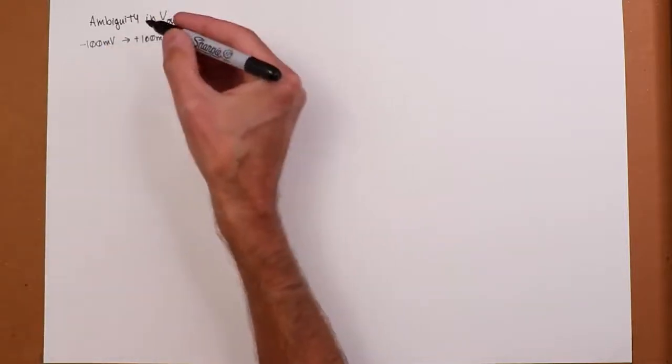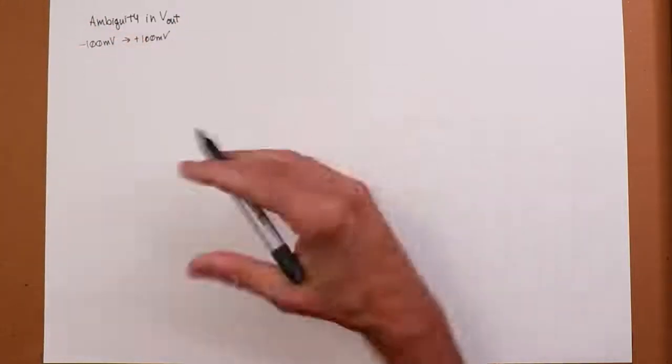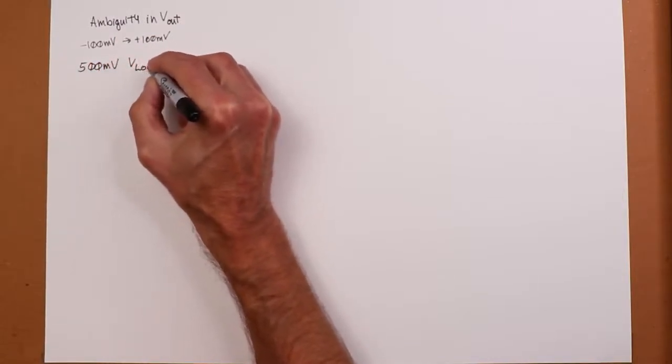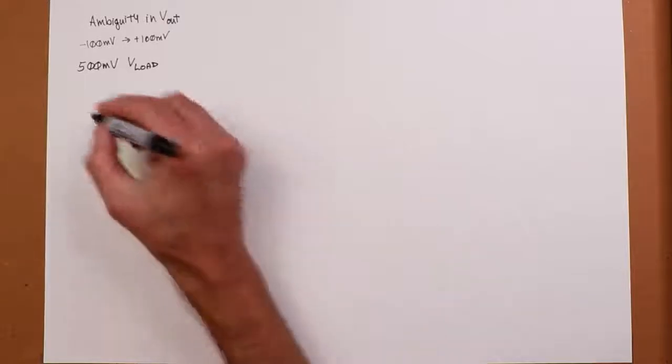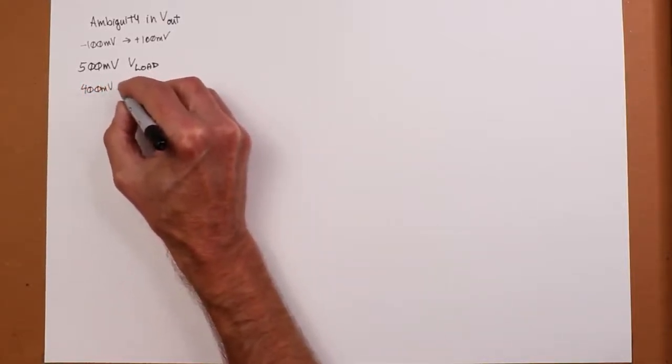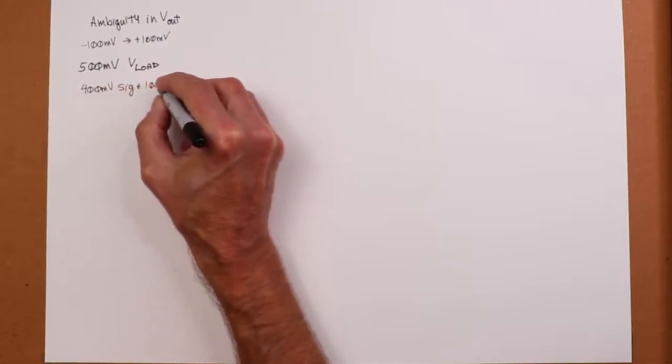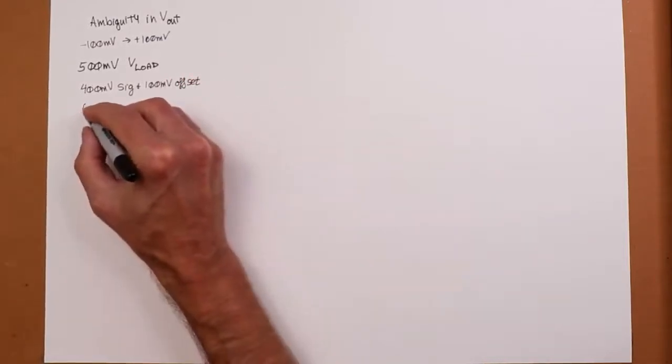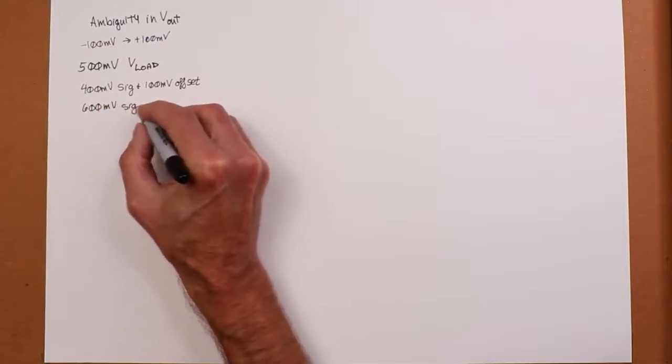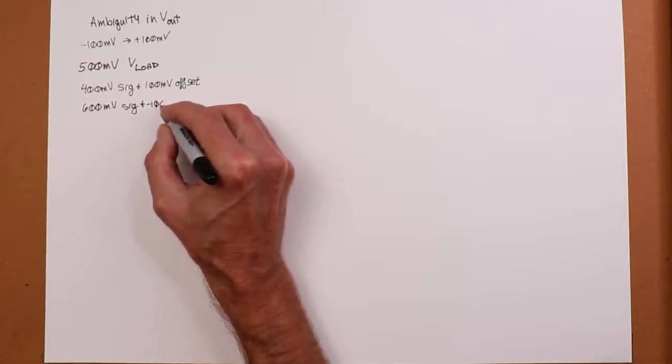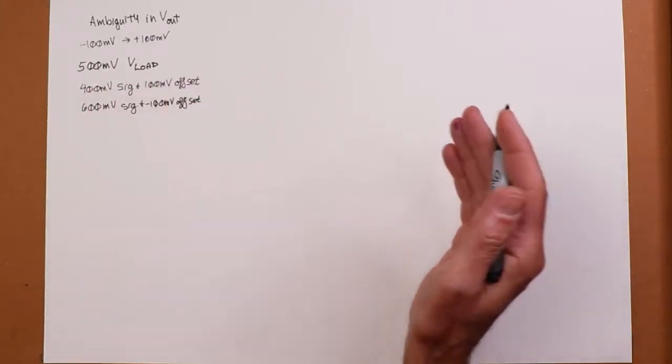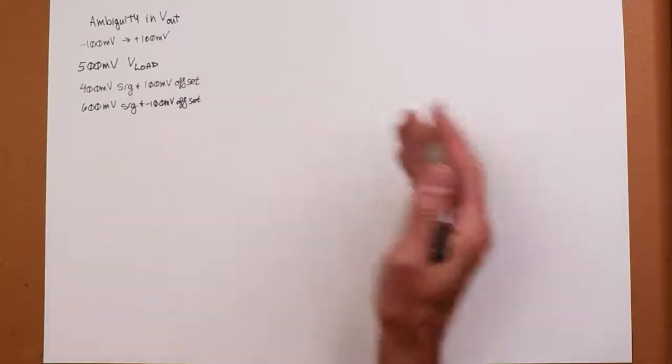Now, I read as an output voltage, like maybe this is coming from a sensor and I'm boosting up the signal. So I read a 500 millivolts signal at the output. Well, how much of that is actual signal and how much of its offset? It could be 400 millivolts of signal and 100 millivolts of offset. But it could also be 600 millivolts of signal and a negative 100 millivolts of offset, and anything in between.